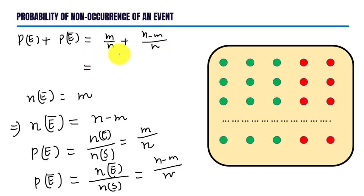Adding these fractions we get m plus n minus m upon n. Here m gets cancelled out and we are left with n by n. This implies probability of non-occurrence of event E equals 1 minus probability of event.